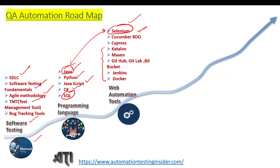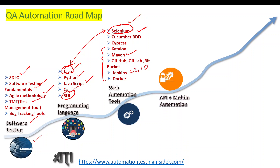Simultaneously, when learning web automation tools, you need to learn DevOps tools. These include Maven (Apache Maven), which is a build tool, and then Git, GitHub, GitLab, and Bitbucket for configuration management. We also have CI/CD with Jenkins — how to deploy and run your build in a Jenkins server — and Docker containers, which let you package your code with dependencies into a deployable unit.